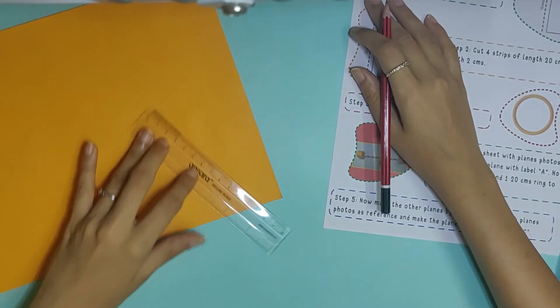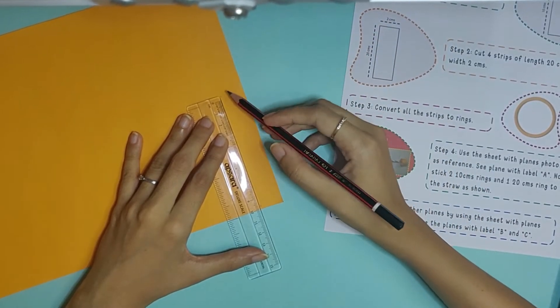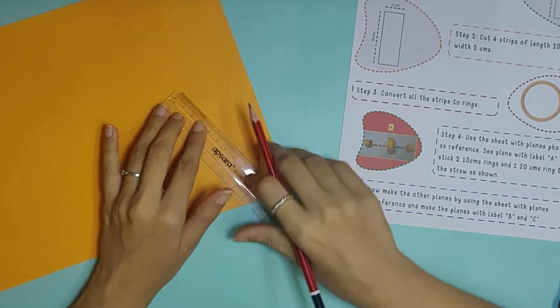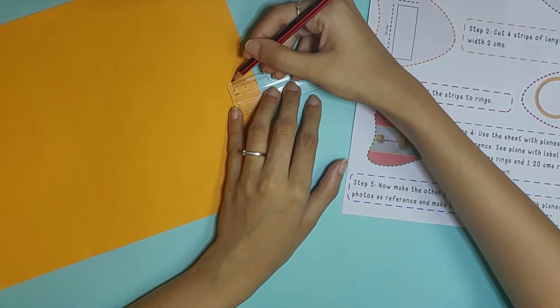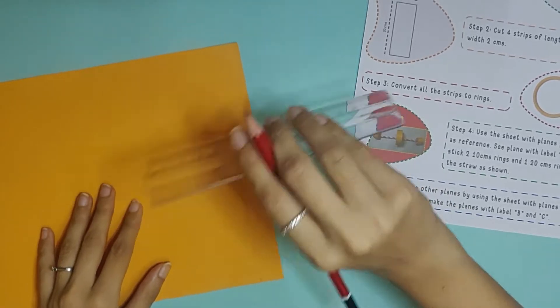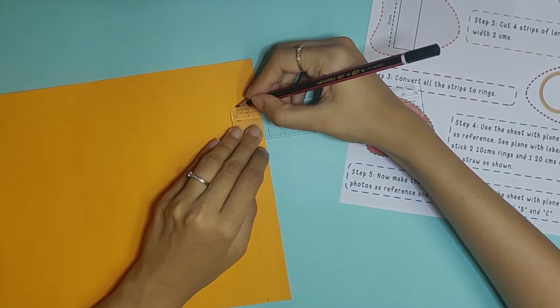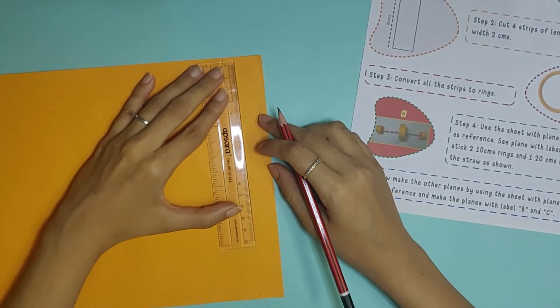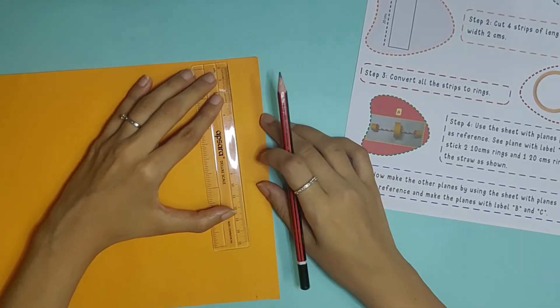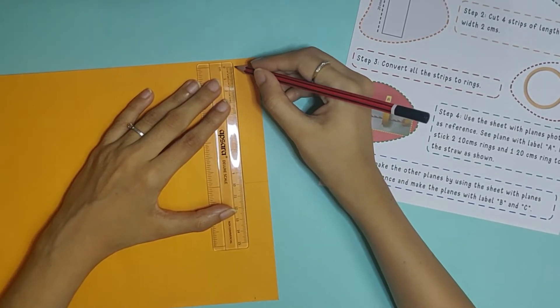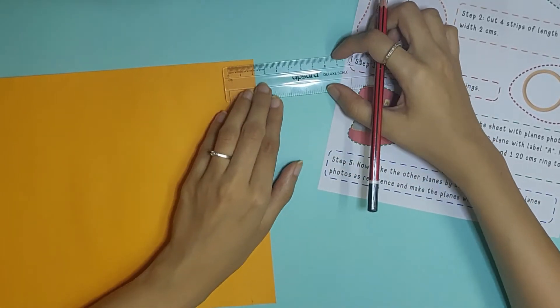Let's go to sheet three and follow the instructions step by step. Step one: cut three strips of length 10 centimeter and width 2 centimeters. I'm going to make my width as 2 centimeter and this is 10 centimeters. I'm also going to mark 2 so that the line comes straight.